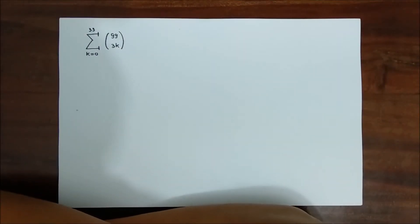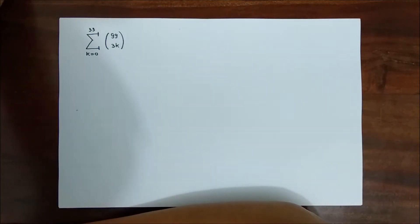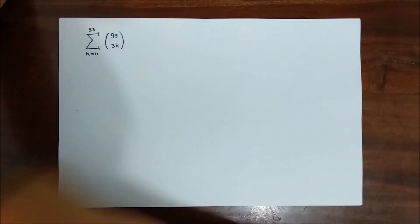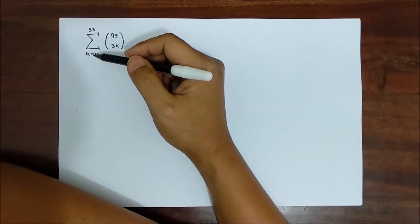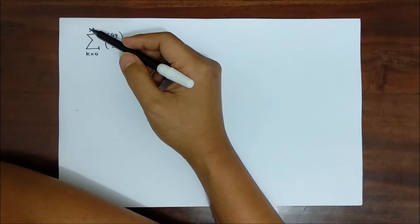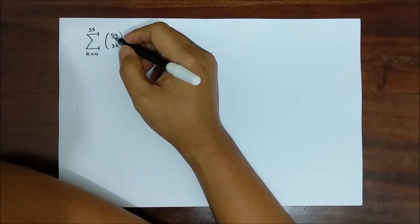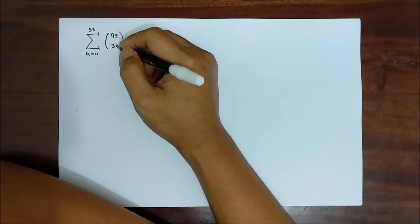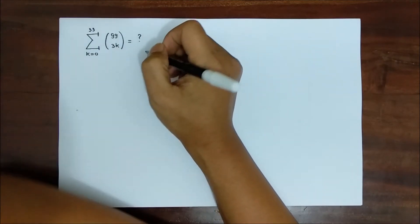Welcome to Primatematica channel. In this occasion we'd like to discuss one problem about binomial coefficients. We have the sum from k equals 0 up to 33 of 99 choose 3k, and the question is to find the value of this sum.